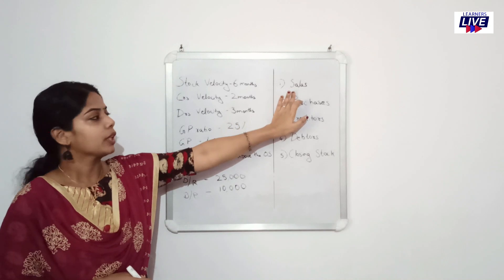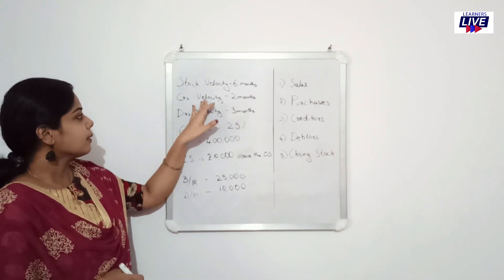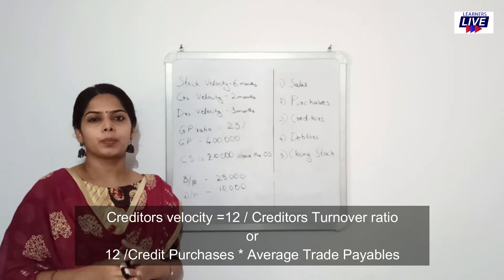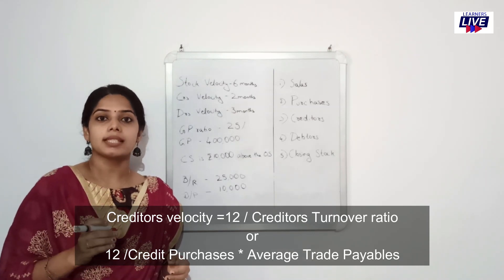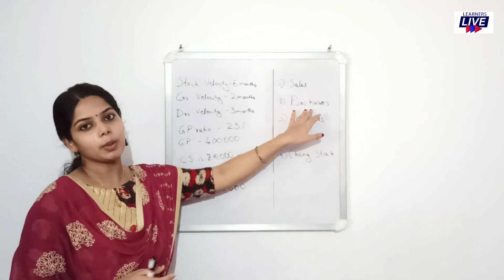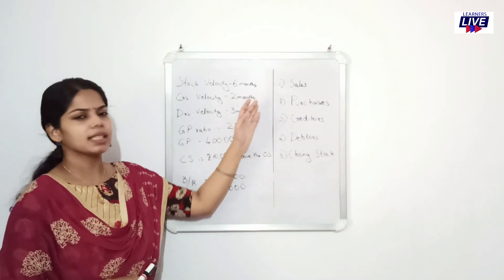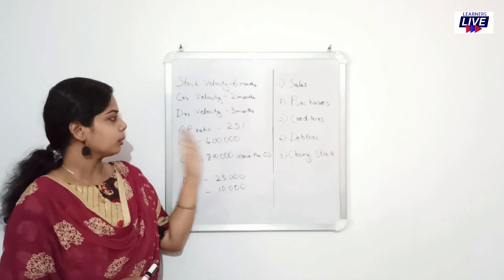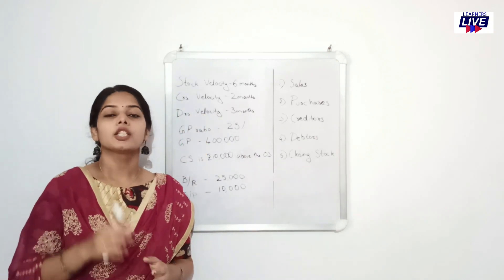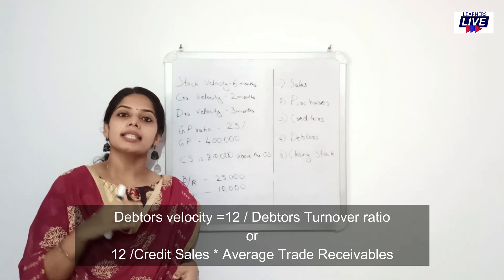We have the same sales. This is the purchases. We have the information about sales. We have the creditors velocity. What is the number of months in the year? That is 12. Divide by creditors turnover ratio, that is 12. So 12 divided by credit purchases into average creditors or average credit payables. 12 or 365 divided by debtors turnover ratio, and 12 or 365 divided by credit sales into average debtors.